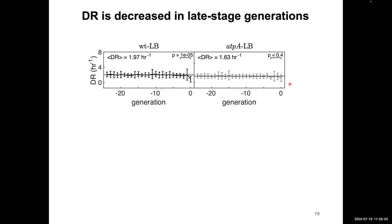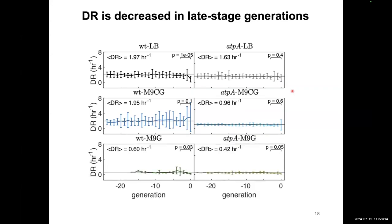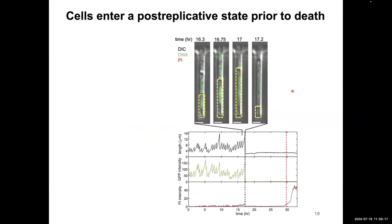The doubling rate also shows the same pattern — decreasing in the final generations of the cell cycle. The next interesting finding was what happened after cells could not divide anymore. Here's an example of a cell in one of those channels: it grows and divides until at some point it goes through the last division and cannot divide anymore, so the length stays constant from that point.